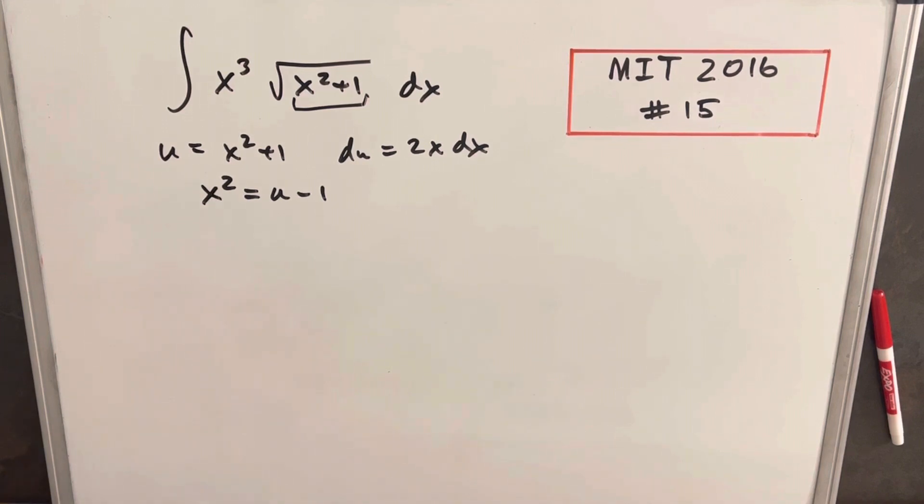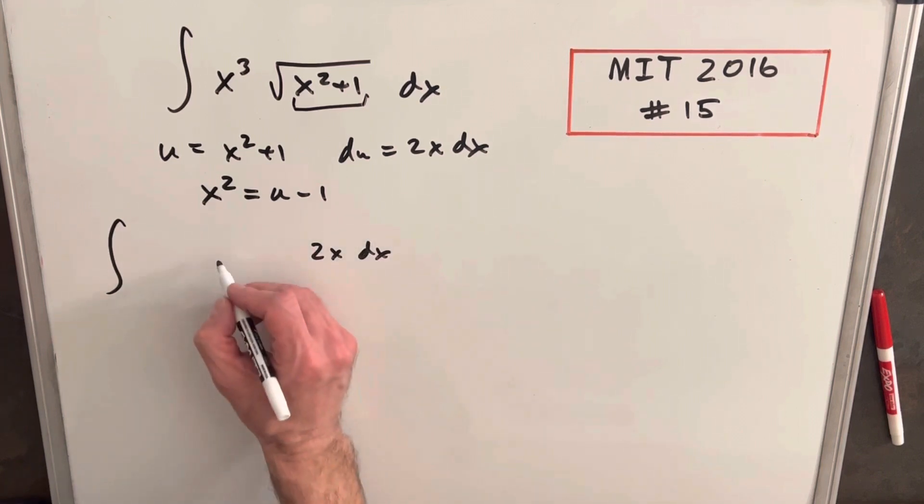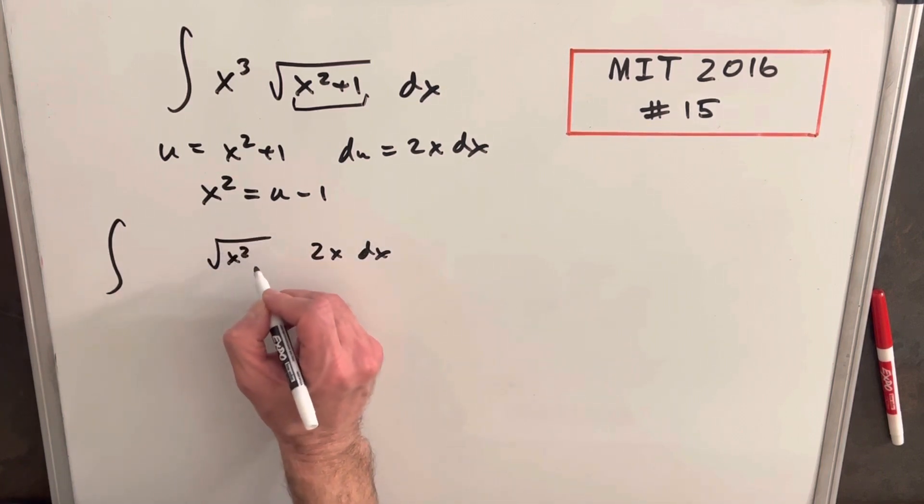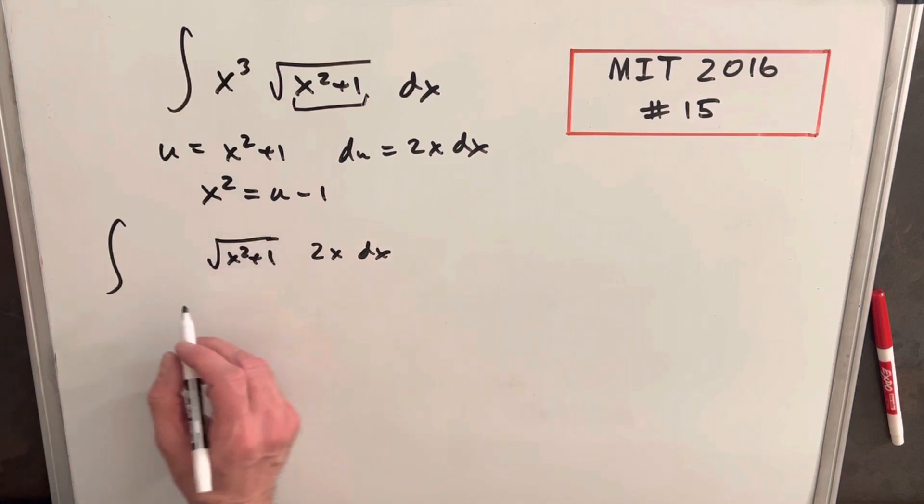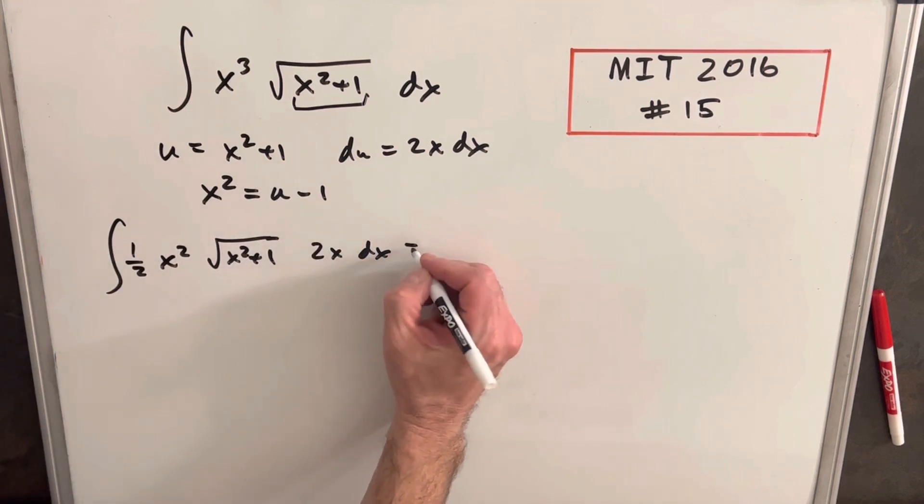Actually, before I do the substitution, what I'm going to do is I'm just going to break it up to make it a little easier on myself. I'm going to bring a 2x dx over here. We'll have our radical square root of x squared plus 1, and then I'm going to write this as half x squared. Just noticing half x squared times 2x is x cubed, so I haven't changed the expression. I'm just doing that to set up this u substitution and make that part easy.